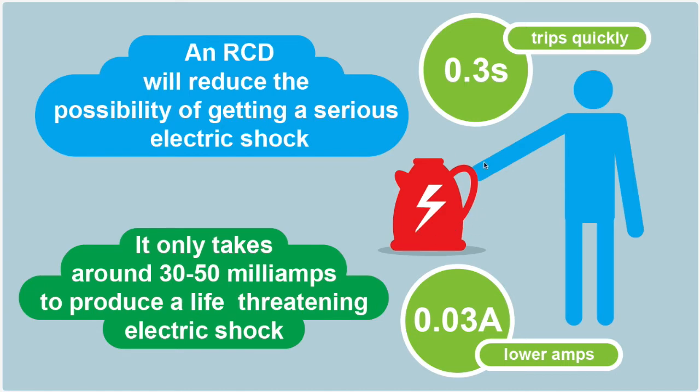Anything above 0.03 of an amp can start becoming dangerous to life, and the RCD trips very quickly. So that's what the RCD does—it trips power at a much lower rate than a normal MCB and trips very quickly. It's a very good device for additional safety in your electrical installation.